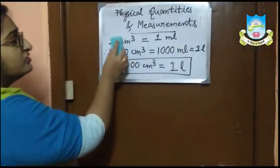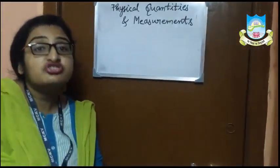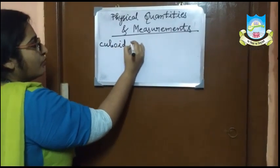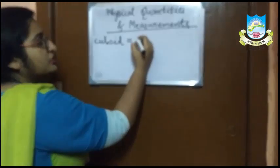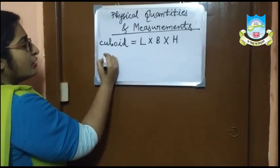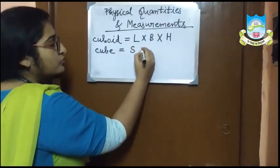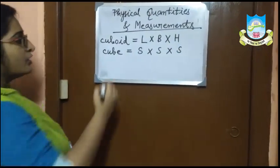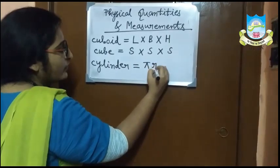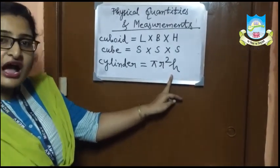Now we will learn the formulas for finding out the volume of some 3D shapes. For a cuboid — which has length, breadth, and height — the formula is: volume = length × breadth × height. For a cube, since all sides are equal, the volume = side × side × side. The volume of a cylinder is π r² h, where π is 22/7, r is the radius, and h is the height of the cylinder.